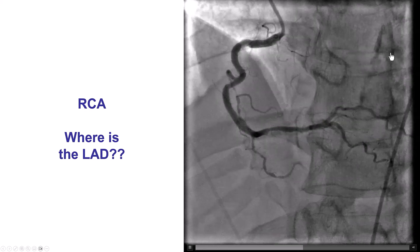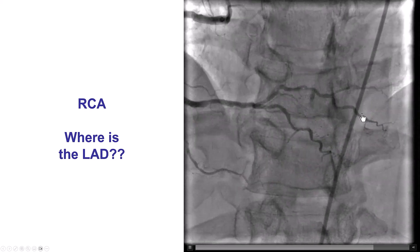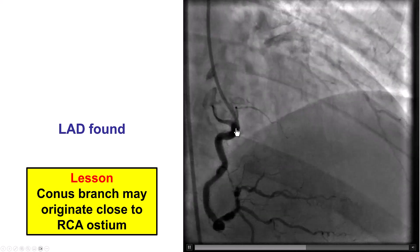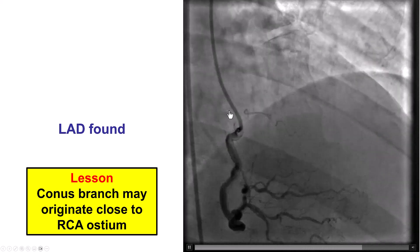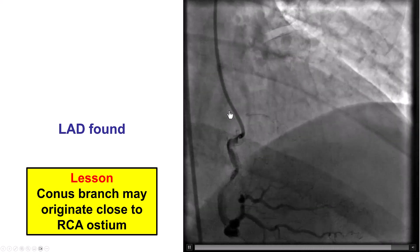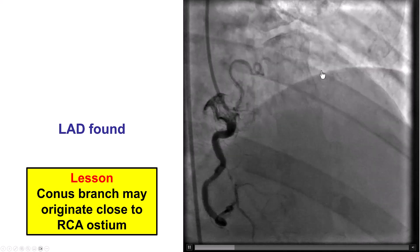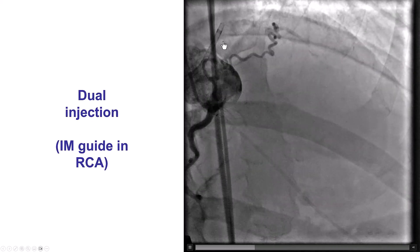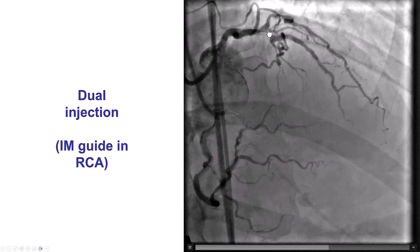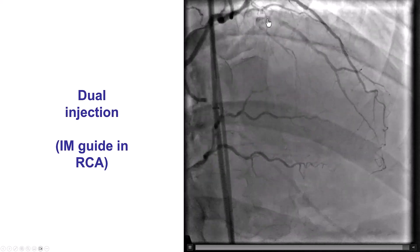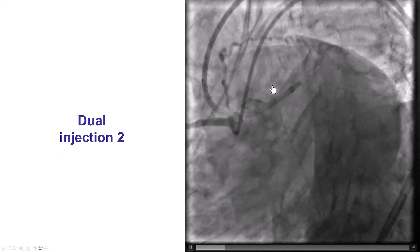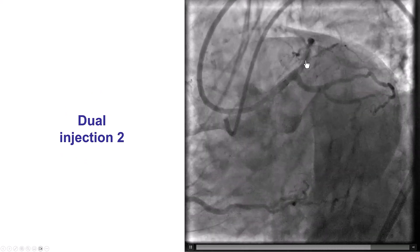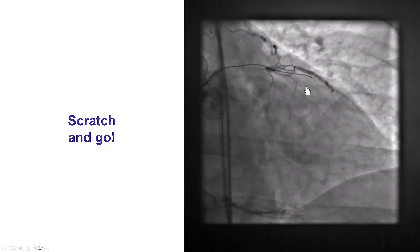This is the right coronary artery. We don't really see much filling of the LAD. However, once we take a picture with the catheter less deeply engaged, we see a Vieussens' collateral that comes from the proximal RCA and actually fills the LAD. Doing a dual injection, it becomes much more clear that the CTO is actually a fairly short CTO, and doing orthogonal projections helps further clarify the location of the proximal cap.